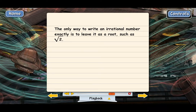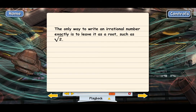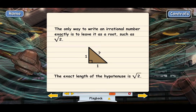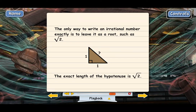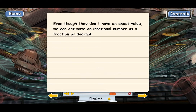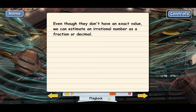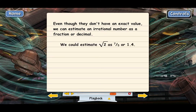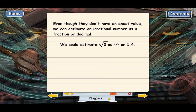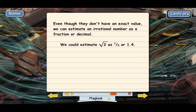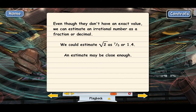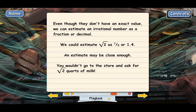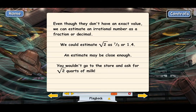Irrational numbers are a new category of numbers different from whole numbers, fractions, or decimals. The formal definition: irrational numbers are numbers that cannot be written as whole numbers, fractions, or decimals — whether the decimal is repeating or terminating. When solving an equation, if you want an exact answer, you just leave it as a root. The exact length of that hypotenuse is square root of 2. Even though we can't write irrational numbers exactly, we can estimate them — for instance, 7 fifths or about 1.4.